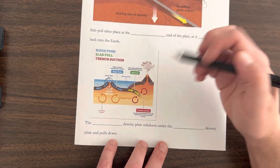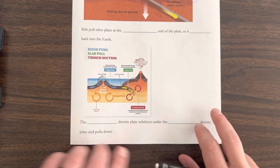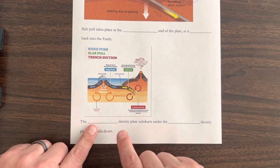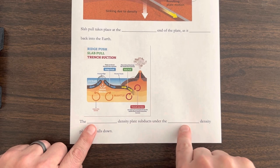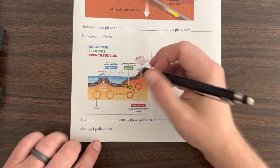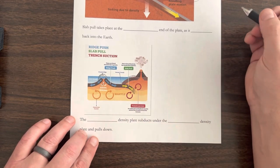The reason that one is going under another is because the higher density plate subducts under the lower density plate. So this one sitting on top is lower density, and this one going under is higher density.